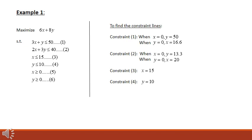Similarly, for the second constraint, when x equals 0, y equals 13.3, and when y equals 0, x equals 20. The third constraint is a vertical straight line x equals 15, and the fourth constraint is y equals 10, which is a horizontal straight line. The fifth and sixth constraints are non-negativity constraints.